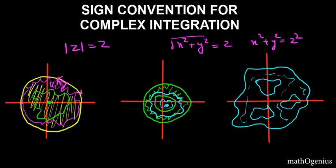If you go in the other direction, your left hand will be outside the region, and then you take a negative sign with the integration. For the outer boundary going counterclockwise, our left hand is in the region, so this is positive. For the inner boundary, if we go clockwise our left hand would be outside the region, so we must go counterclockwise so that our left hand is inside the region — then it is positive, otherwise negative.